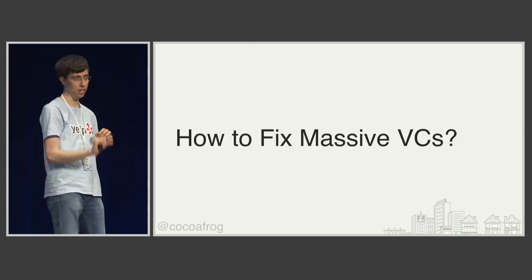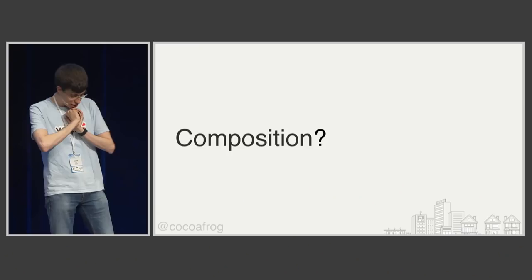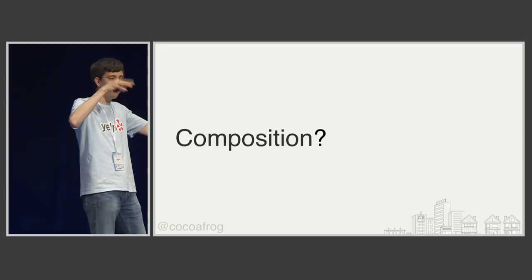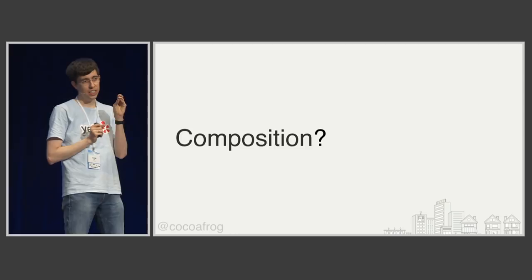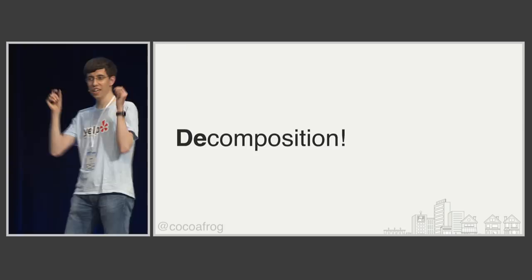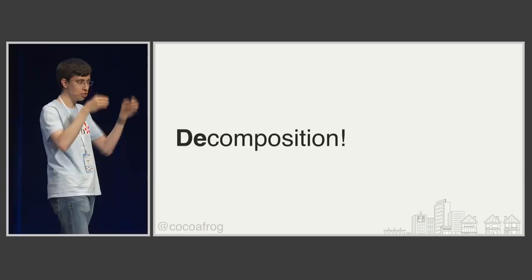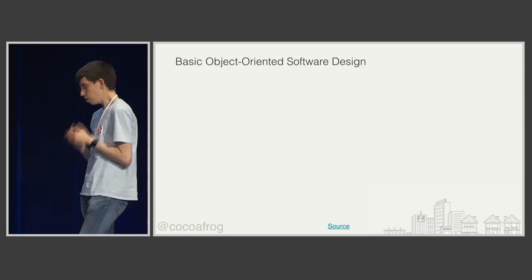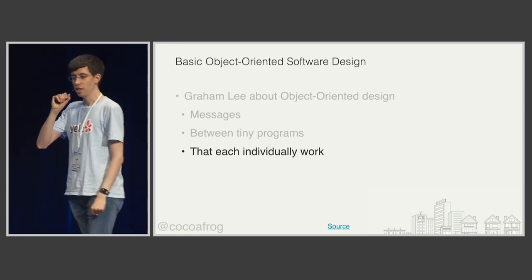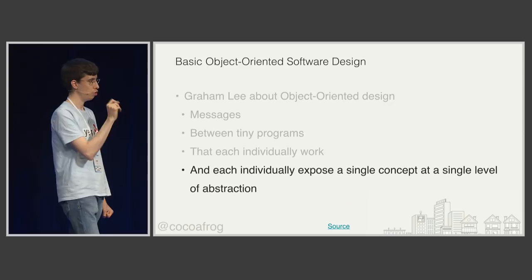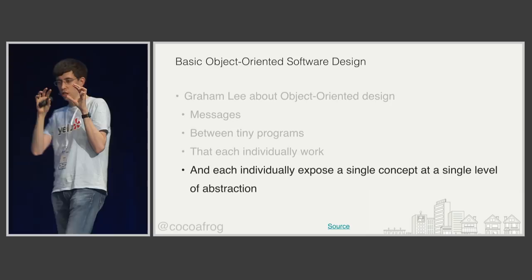Graham Lee gave a nice talk about object-oriented design at Applidress CH, basically saying: object-oriented design means messages between tiny programs that each individually work and each individually expose a single concept at a single level of abstraction. This is our target — tiny programs that expose a single concept at a single level of abstraction.